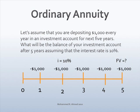Let's assume that you are depositing $1,000 every year in an investment account for the next five years. What will be the balance of your investment account after five years, assuming that the interest rate is 10%? Draw a timeline for the problem assuming that it is an ordinary annuity. Time period is five years, depositing $1,000 at the end of the year for the next five years. Interest rate is 10% and the question mark is on the right-hand side.